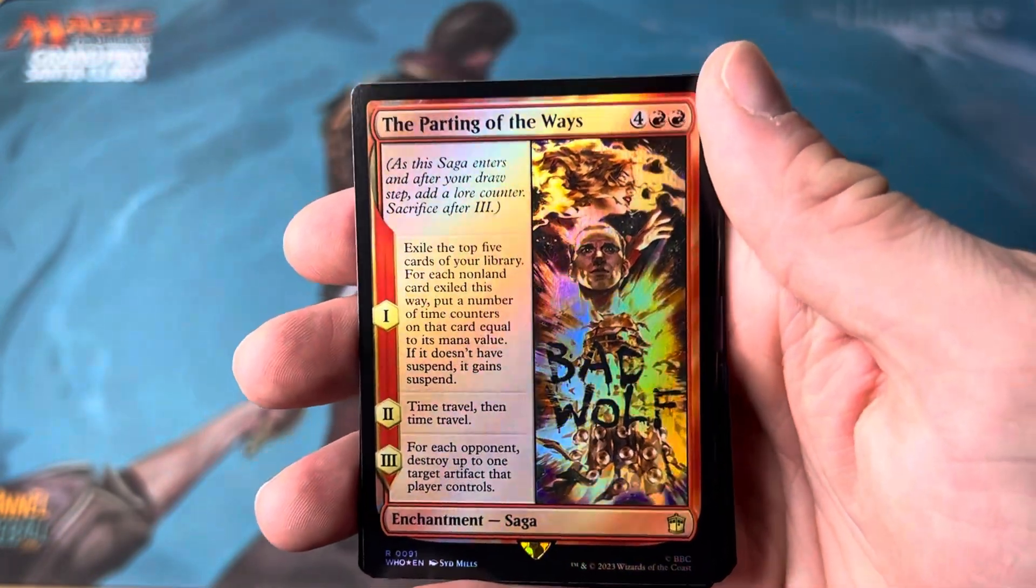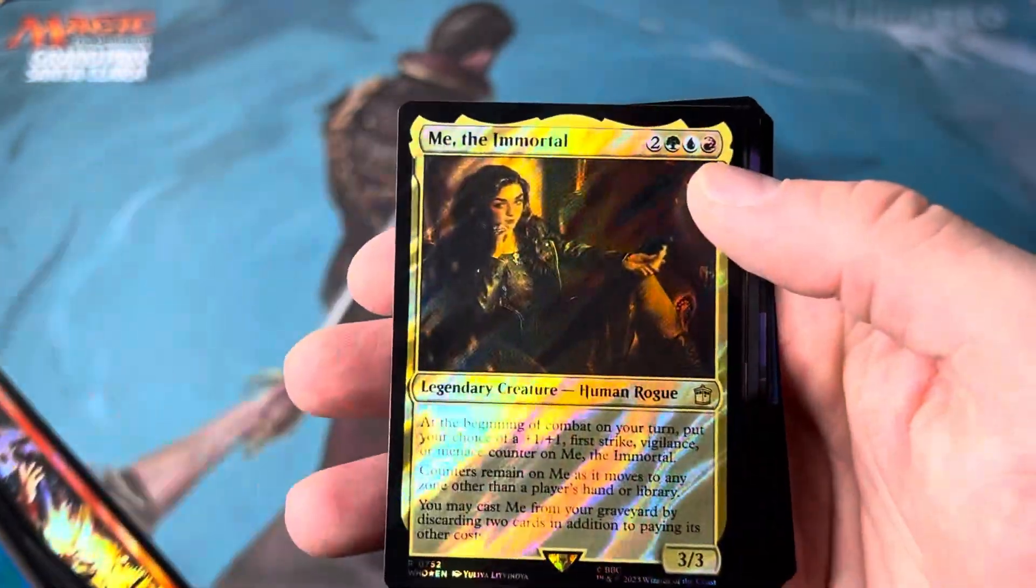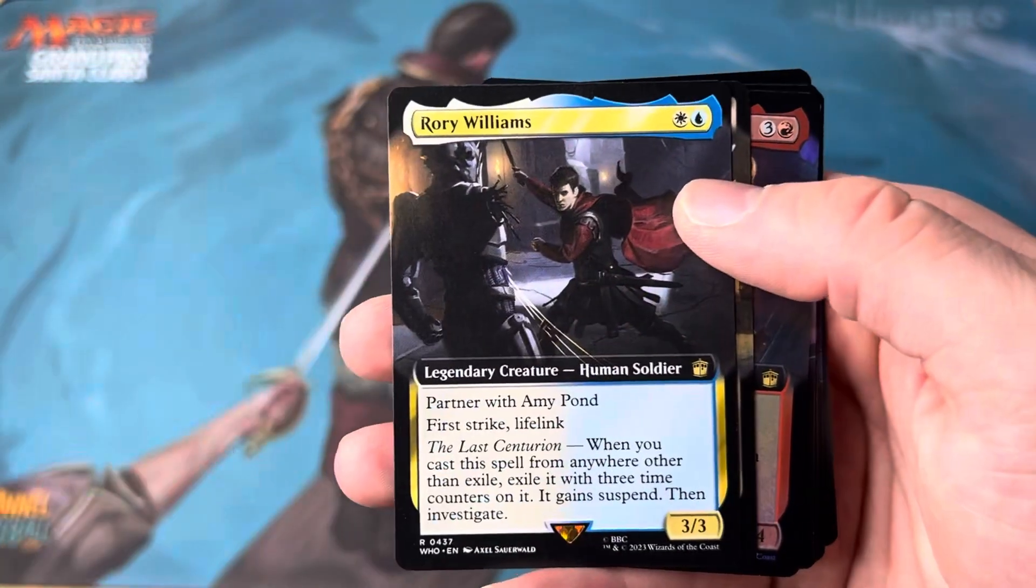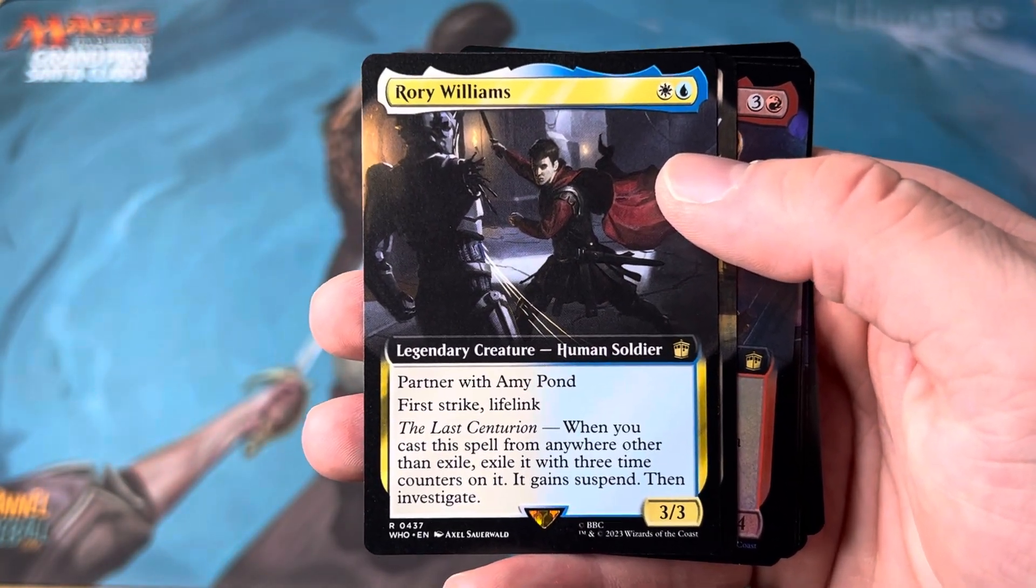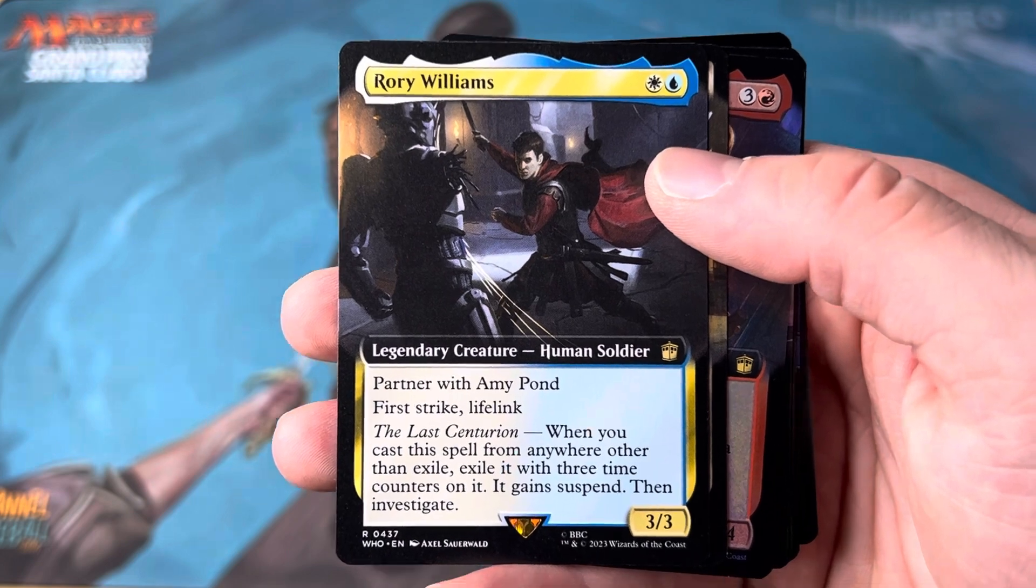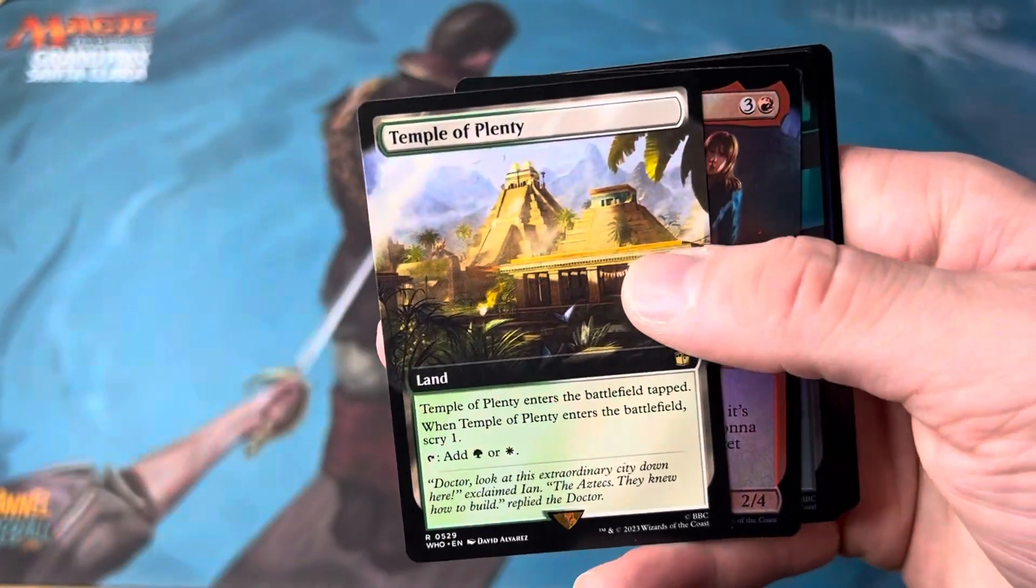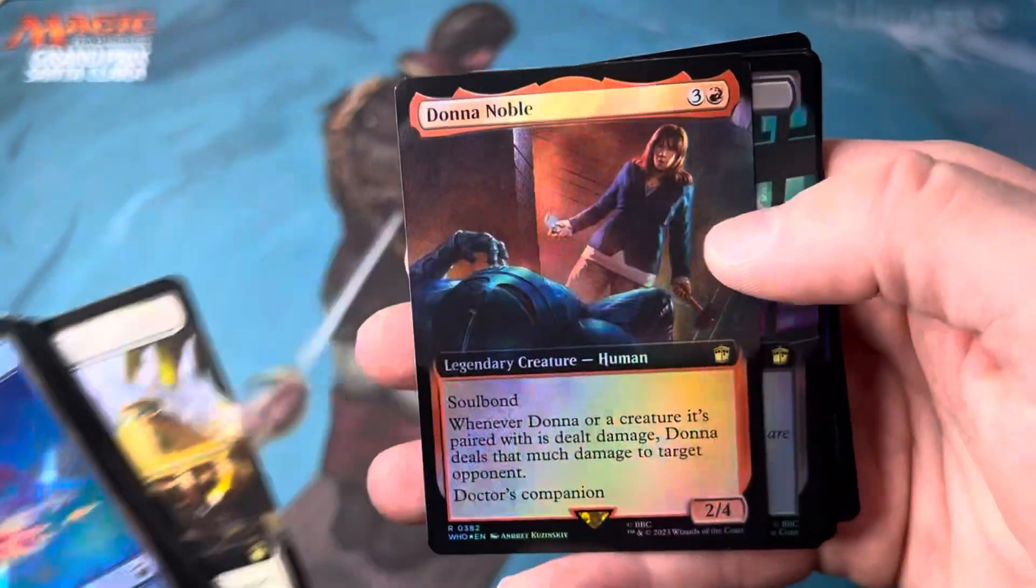The parting of ways. Beautiful. Me the immortal. Rory. Absolutely fantastic. Partner with Amy Pond as he should be. Fantastic. My wife's really going to enjoy seeing that card. That's fantastic.